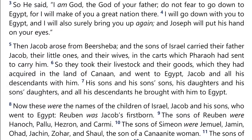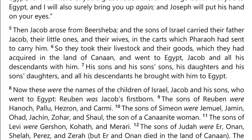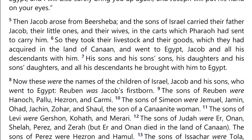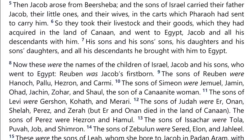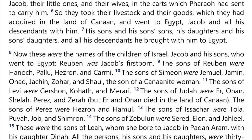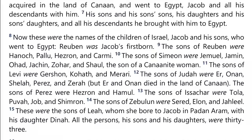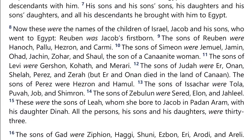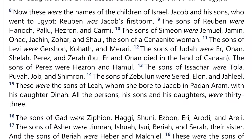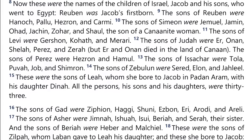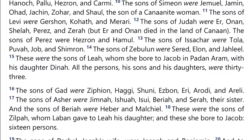Now these were the names of the children of Israel — Jacob and his sons — who went to Egypt. Reuben was Jacob's firstborn. The sons of Reuben were Hanok, Palu, Hezron, and Carmi. The sons of Simeon were Jemuel, Jemid, Ohad, Jachin, Zohar, and Shul, the sons of a Canaanite woman. The sons of Levi were Gershon, Kohath, and Merari. The sons of Judah were Ur, Onan, Shelah, Perez, and Zerah; but Ur and Onan died in the land of Canaan. The sons of Perez were Hezron and Hamel. The sons of Issachar were Tola, Puvah, Job, and Shimron. The sons of Zebulon were Sered, Elon, and Jaliel. These were the sons of Leah, whom she bore to Jacob in Paddan Aram, with his daughter Dinah. All the persons, his sons and his daughters, were thirty-three.